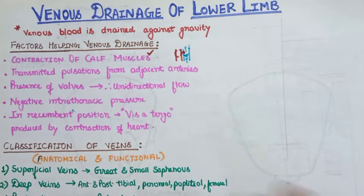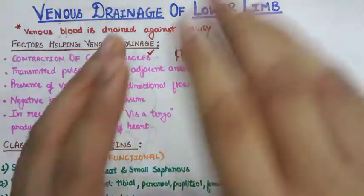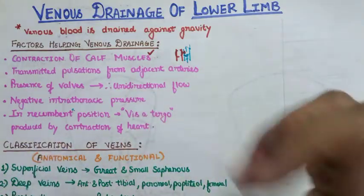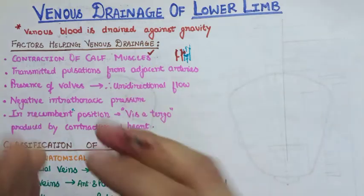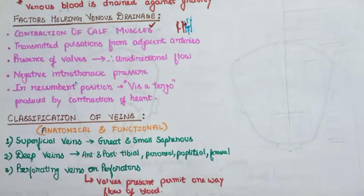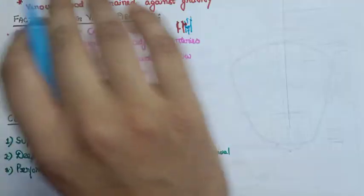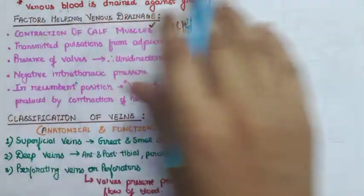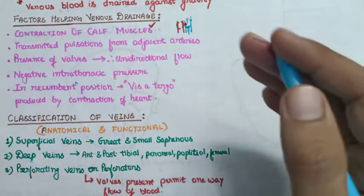Now let's see the classification of veins. The veins of the lower limb are broadly classified into three types: superficial veins, deep veins, and perforators. You can imagine superficial veins as household pipelines on the surface of the ground, deep veins as underground pipes, and perforating veins as the communication between the superficial and deep veins.